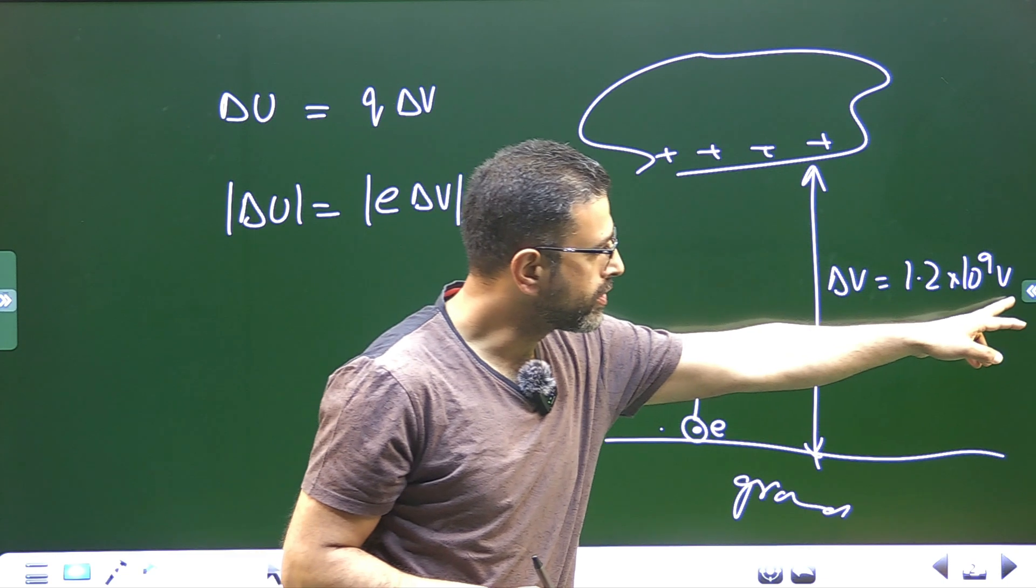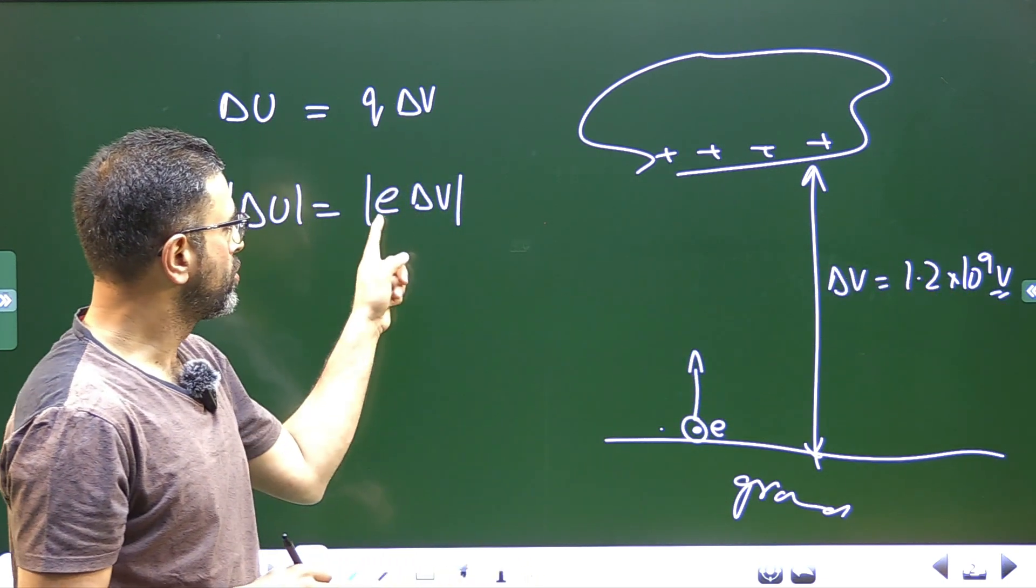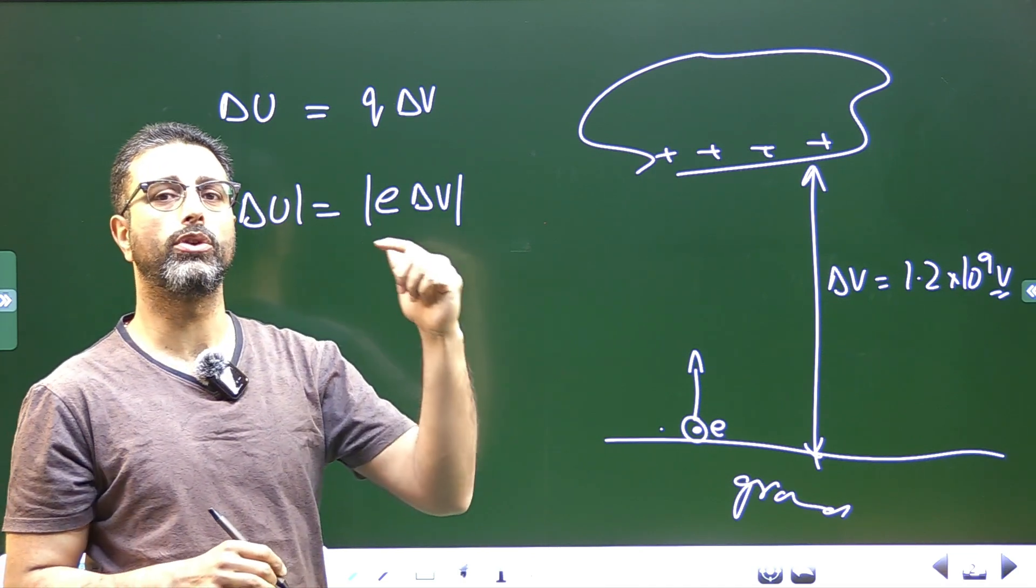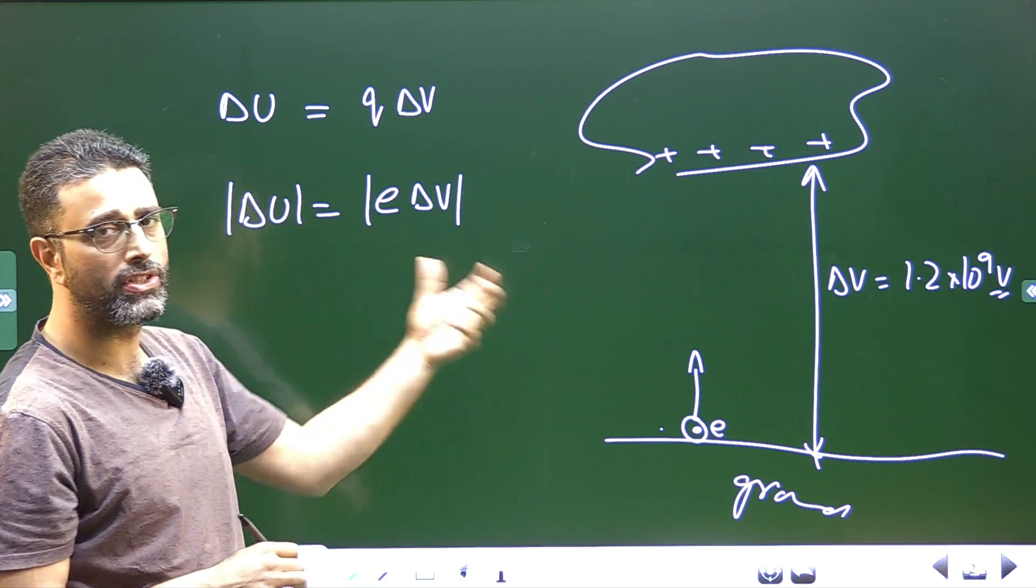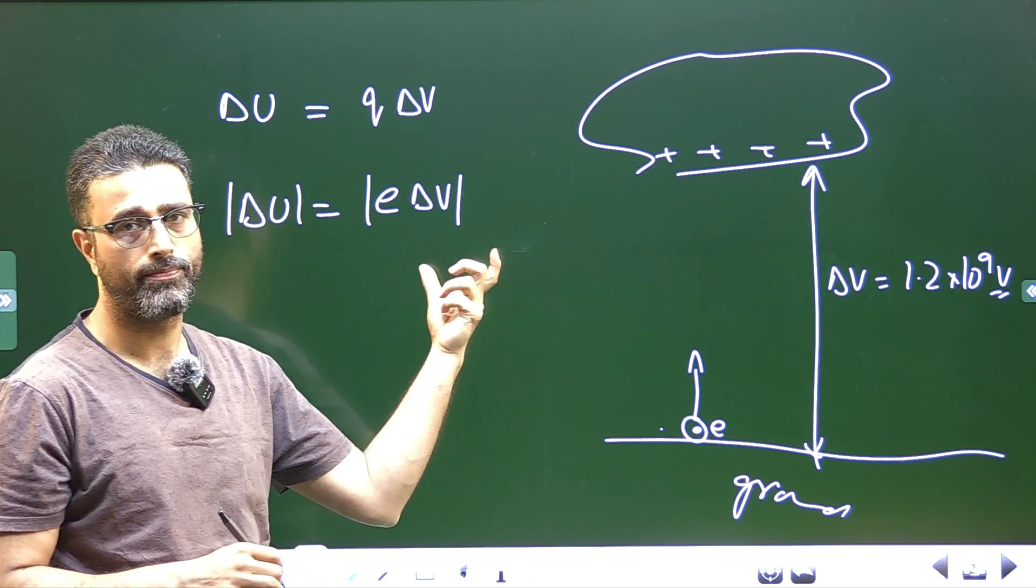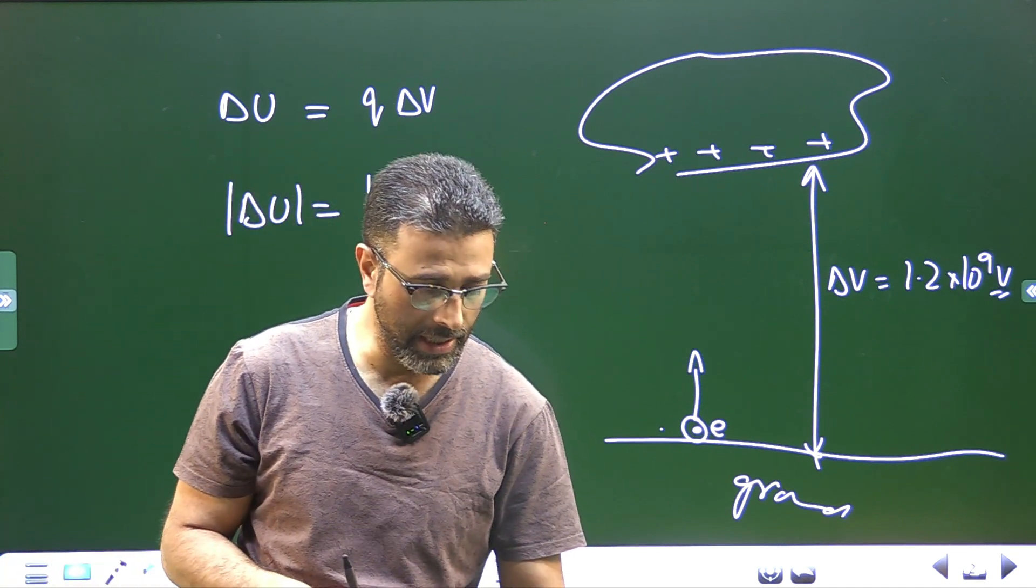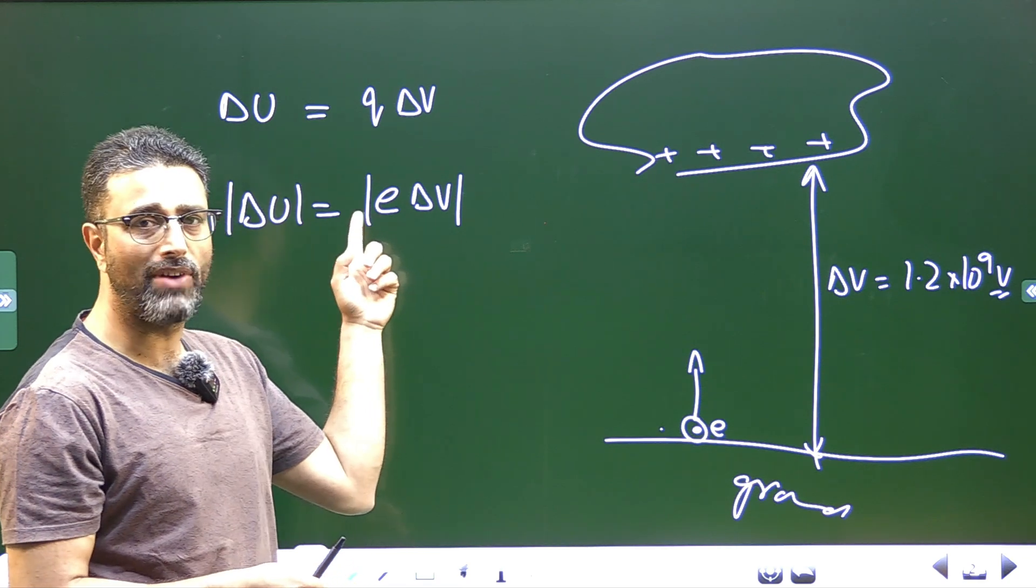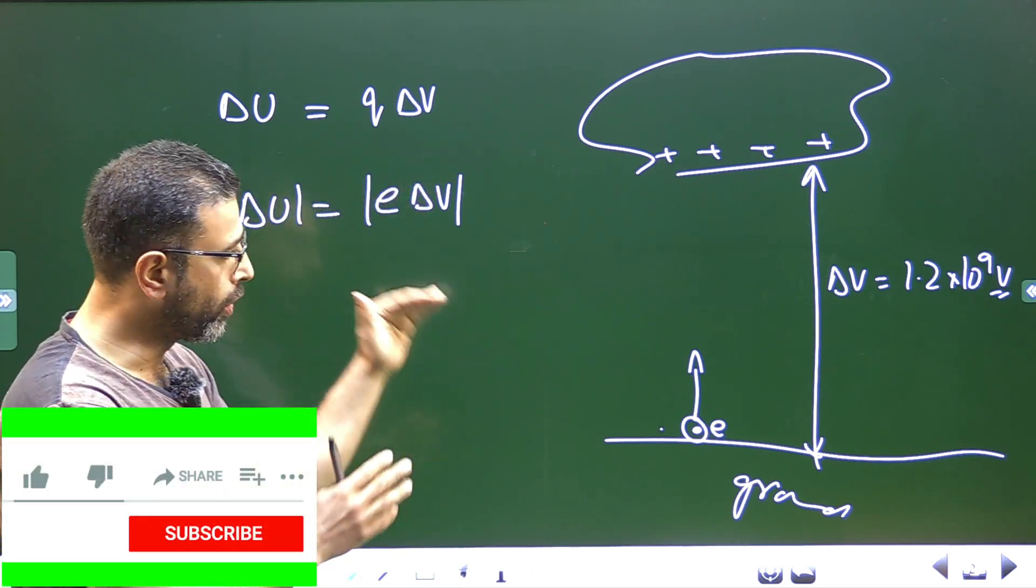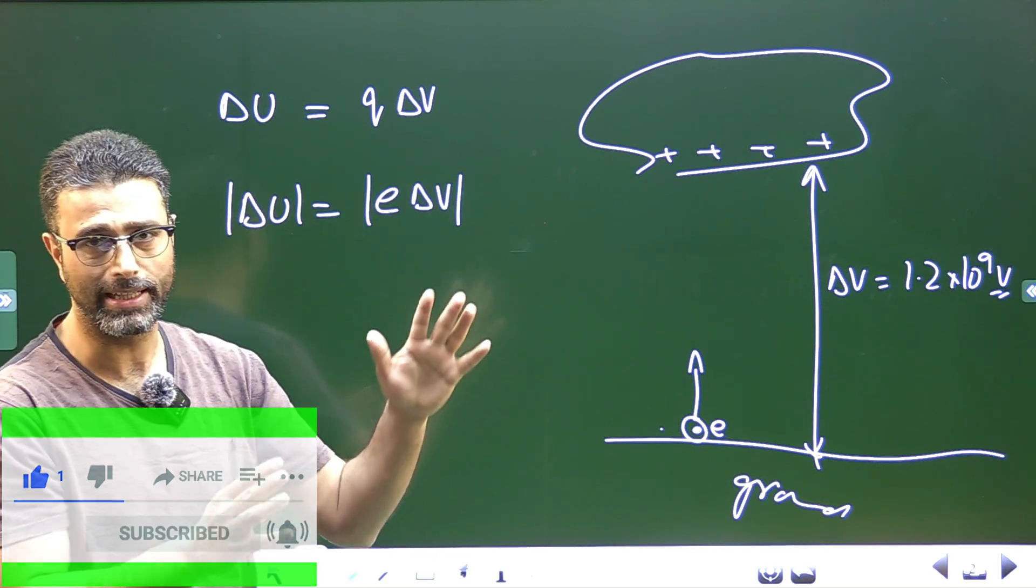That potential difference is given to us in volts, so SI system. If we substitute the charge of electron, 1.6 into 10 to the power minus 19 coulomb, then change in potential energy will be in joules. But we are asked to find change in energy in the units of electron volts. So what we will do is, instead of substituting the value of E, we will just keep E like that. The unit will automatically be electron volts.